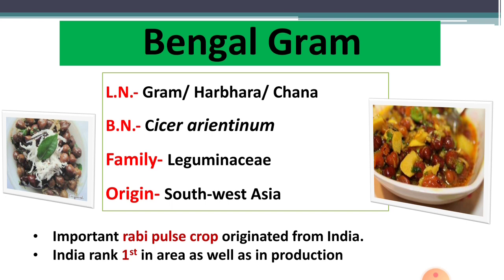Regarding the origin of Bengal gram, it originated from Southwest Asia. Gram is the most important rabi pulse crop, and it is mostly grown in India during the rabi season. India ranks first in area as well as in production of gram.